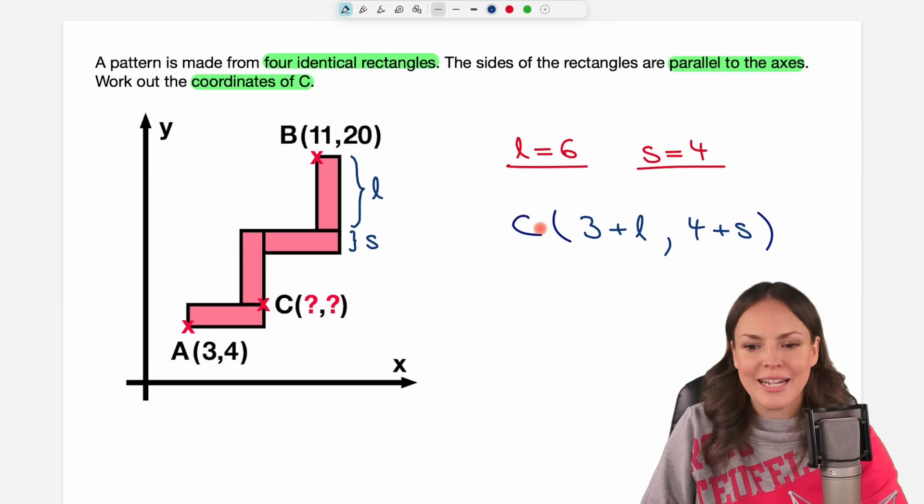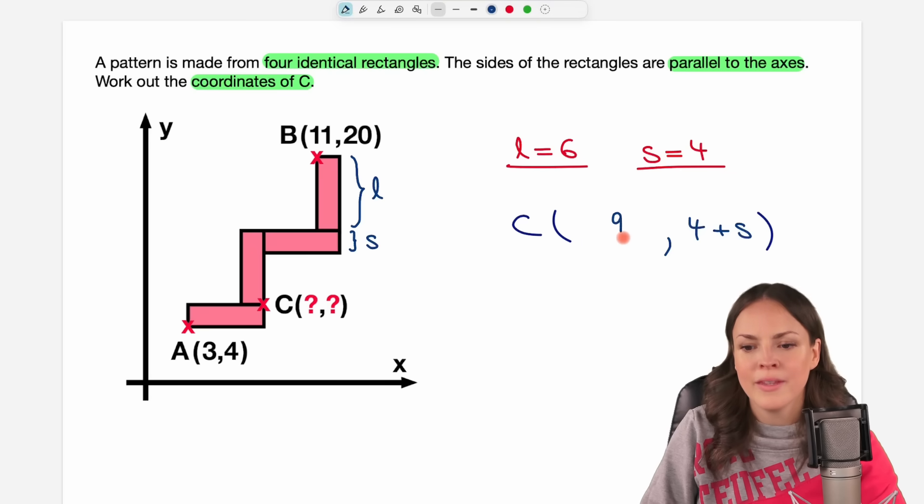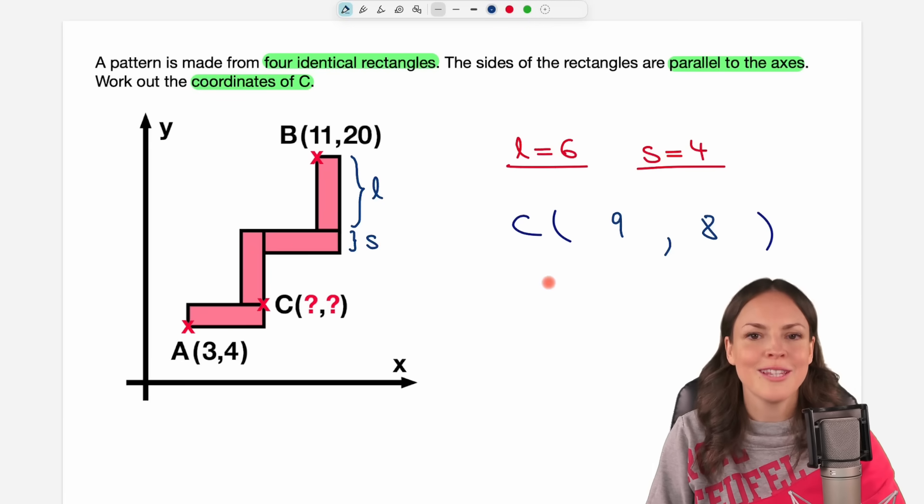Let's go back to our C coordinate. And we can calculate the coordinates now. 3 plus 6 equals 9. And 4 plus 4 equals 8. And we solved this problem.